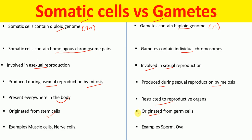Examples of somatic cells include muscle cells and nerve cells, whereas examples of gametes include sperm and ova.